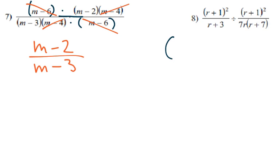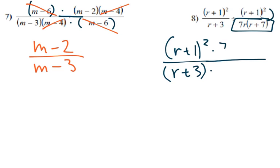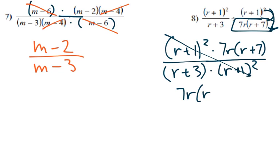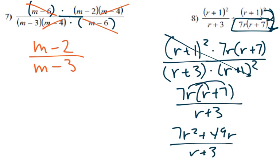Number 8, r plus 1 squared over r plus 3 times, flip this, so this goes up top, 7r times r plus 7. This goes on the bottom, r plus 1 squared. Can cancel those two out. Well, I don't see us being able to do anything else, so 7r times r plus 7 over r plus 3. If I really wanted to, I could multiply that in and go 7r² plus 49r over r plus 3, but you don't have to.